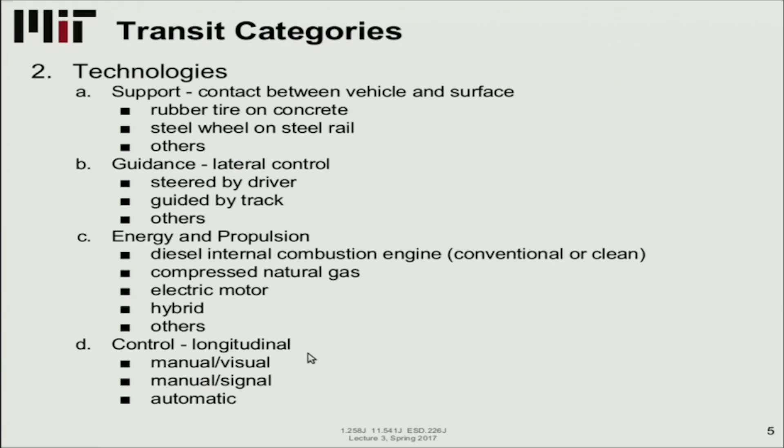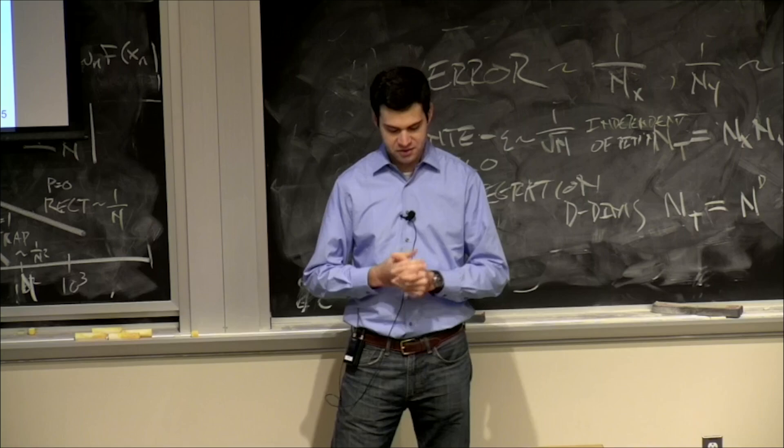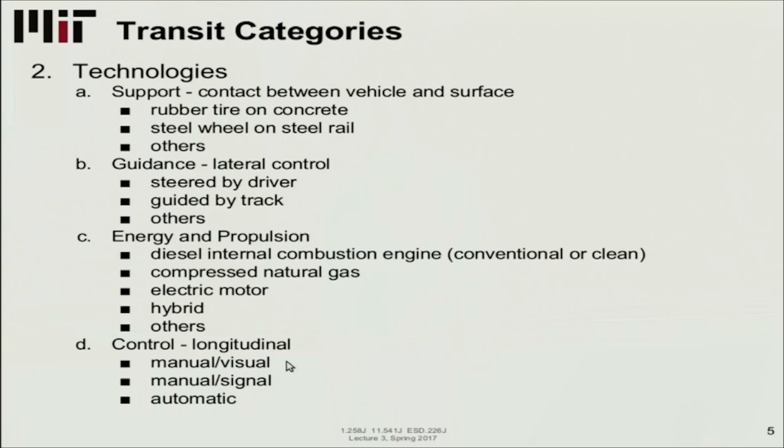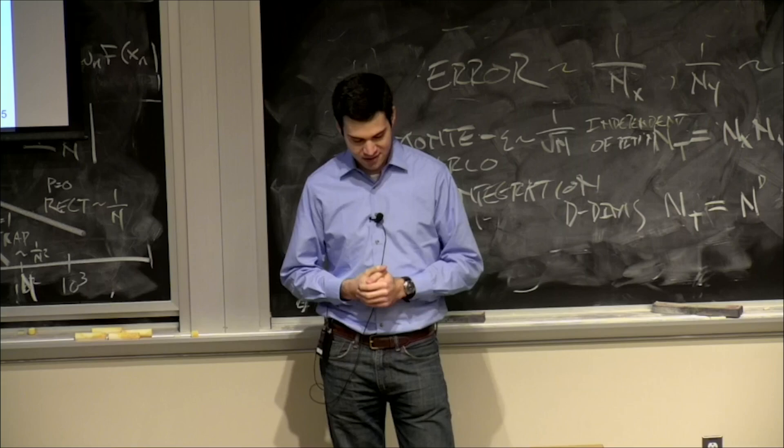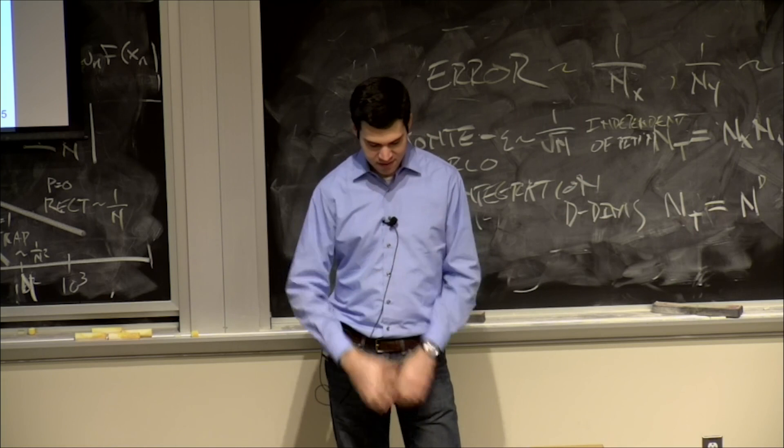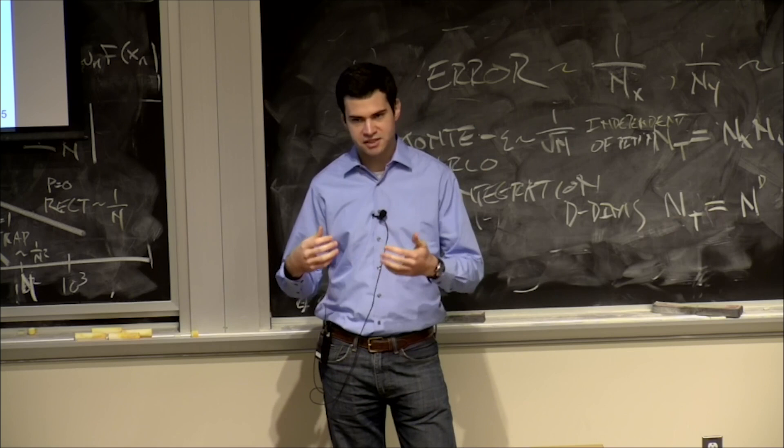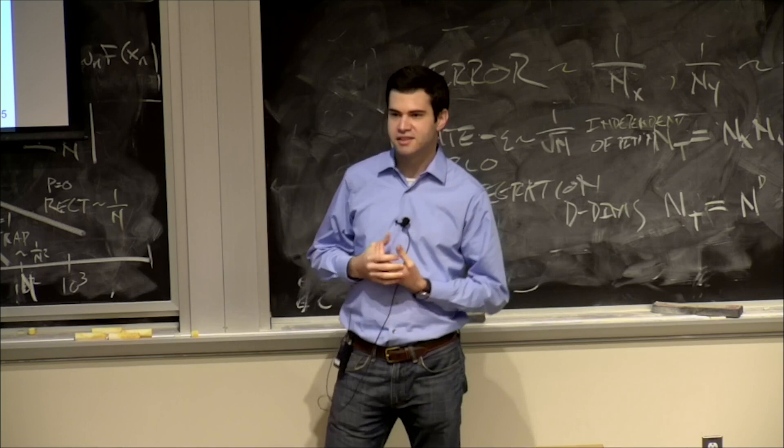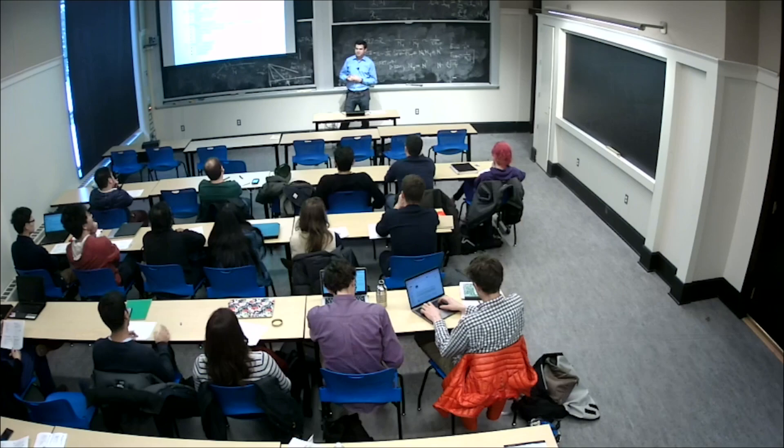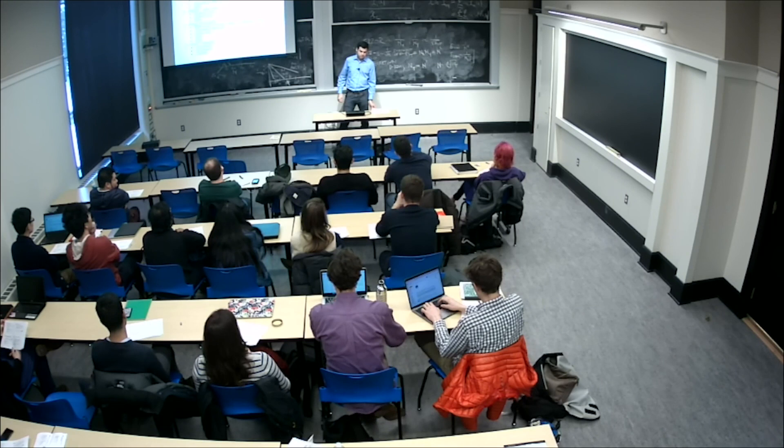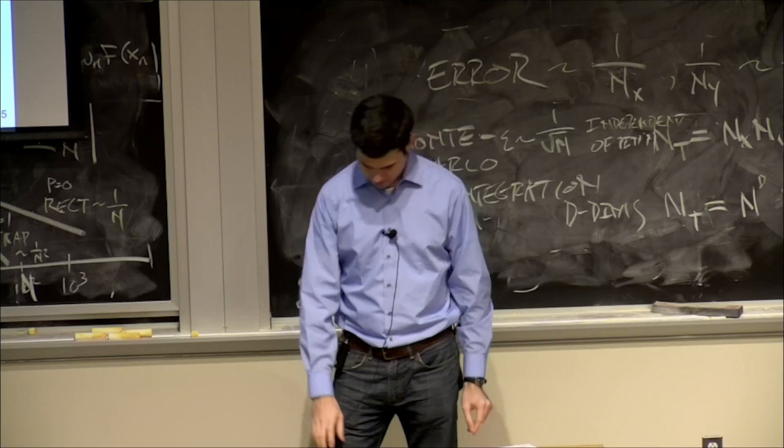All right. What about control? So we talked about guidance, which is lateral control. What about longitudinal control? How do you control when you stop? How do you accelerate? How quickly you go or brake? So we have manual or visual. Buses are typically driven by a person who has a brake and an accelerator and they control everything manually and on site. There's also manual with signals, more typically for rail. You have signals that might set a speed limit on the vehicle and protect trains from crashing into each other. And then there's fully automatic. So you have a robot controlling the longitudinal movement of the vehicle. Questions on these technologies? We'll see some examples. Eitan? In terms of automatic control, there's already automatic as well? Yes. They may use magnets, which is exactly where it is. Yeah. Where to brake and where to turn. That's right. Yeah.